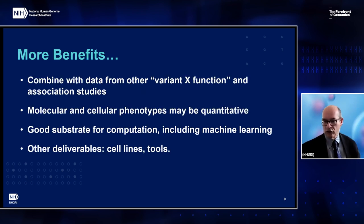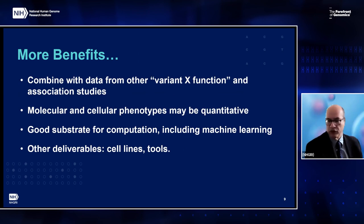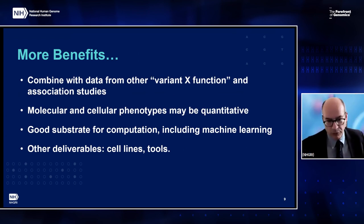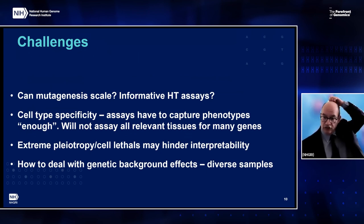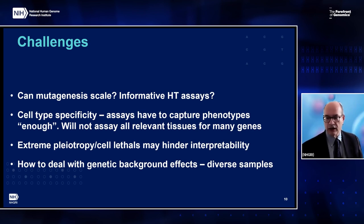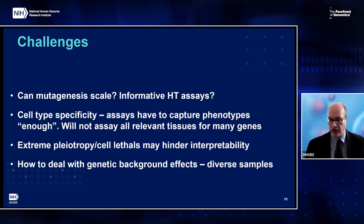Some additional benefits: MORPHIC provides another source of data for making inferences about function in association studies and other gene function or perturbation studies. The data has potential to be quantitative, which will allow for improved analyses, and consistency of information is valuable when doing analyses. This project may yield other deliverables in addition to the knowledge generated, including cell lines, analysis tools, or computational tools. There are challenges: the success of phase one depends on how well it informs our ability to address them. Can mutagenesis scale? We think this is at a stage that can now be pushed. There are commercially available knockout iPSCs and existing libraries of CRISPR gene knockouts. We'll need to be alert to potential challenges including off-target effects and genetic compensation.